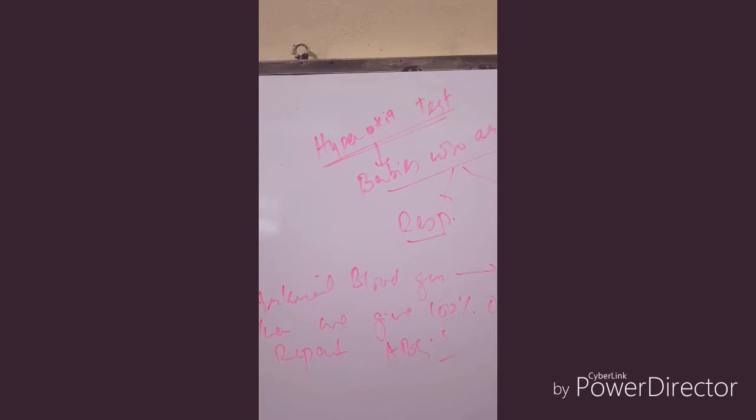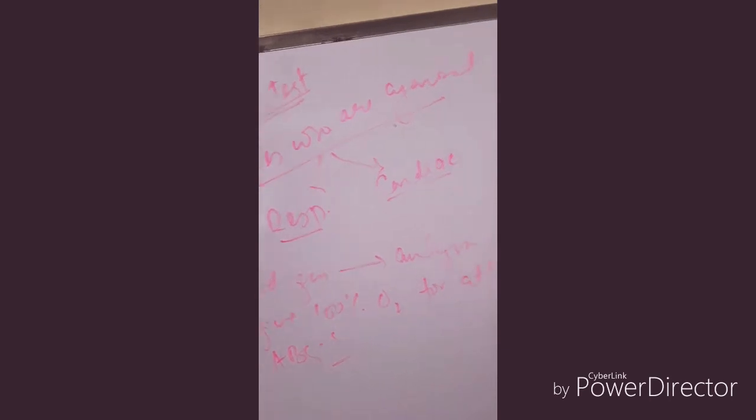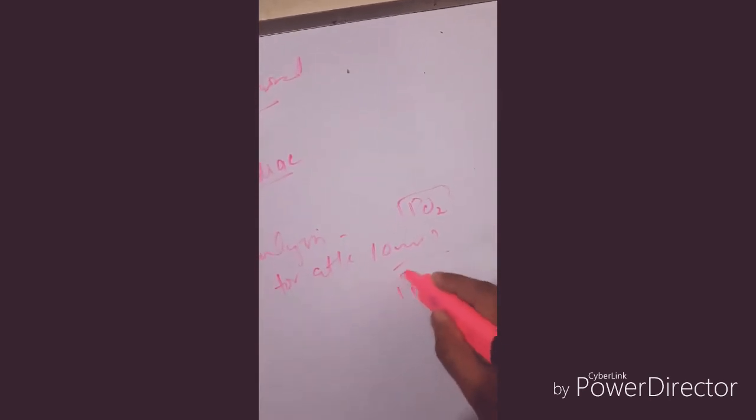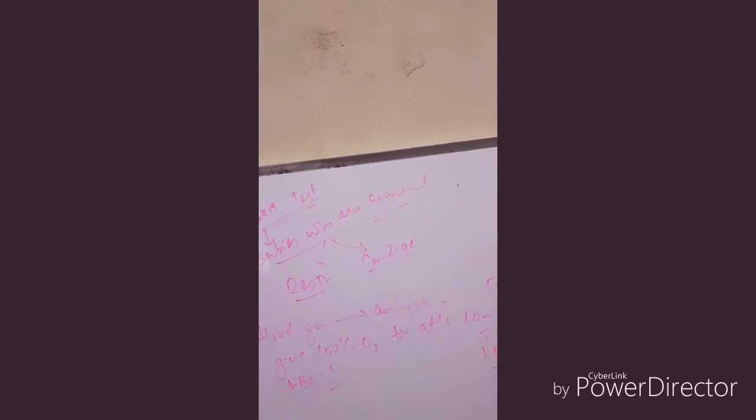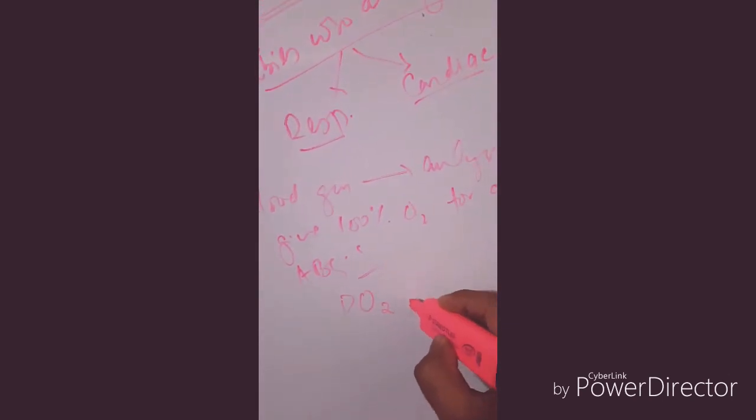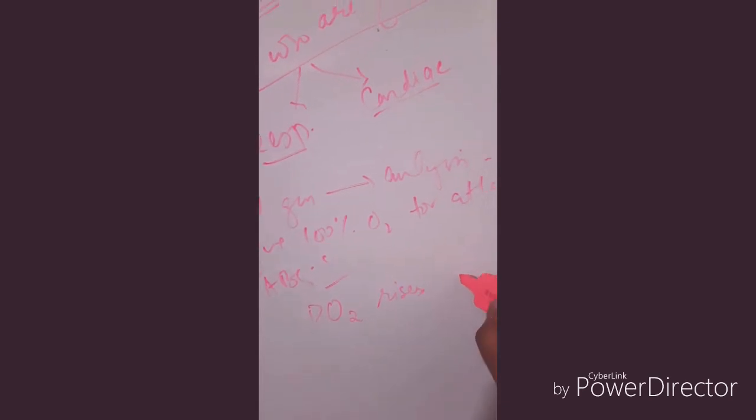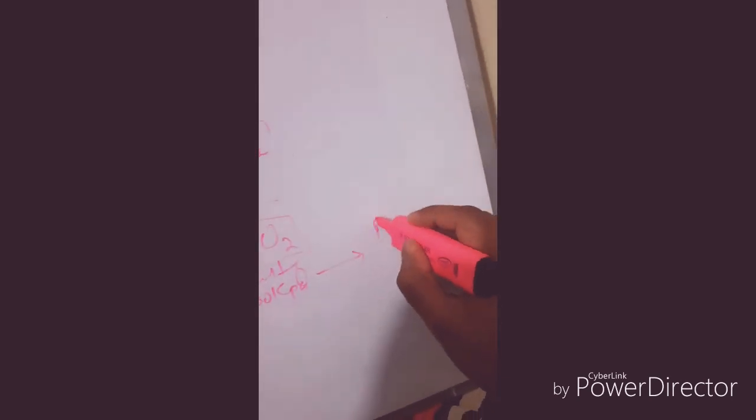We look for the pO2 which we got on initial ABGs and the pO2 after giving 100% oxygen for at least 10 minutes. If the pO2 rises above 150 mmHg or 25 to 30 kPa, it rules out cardiac causes.